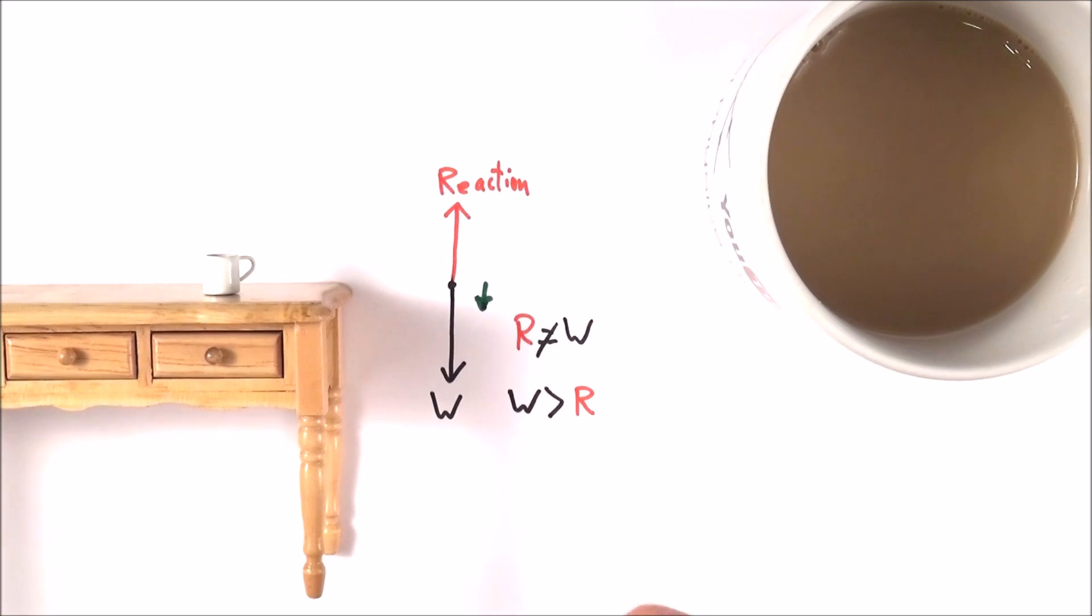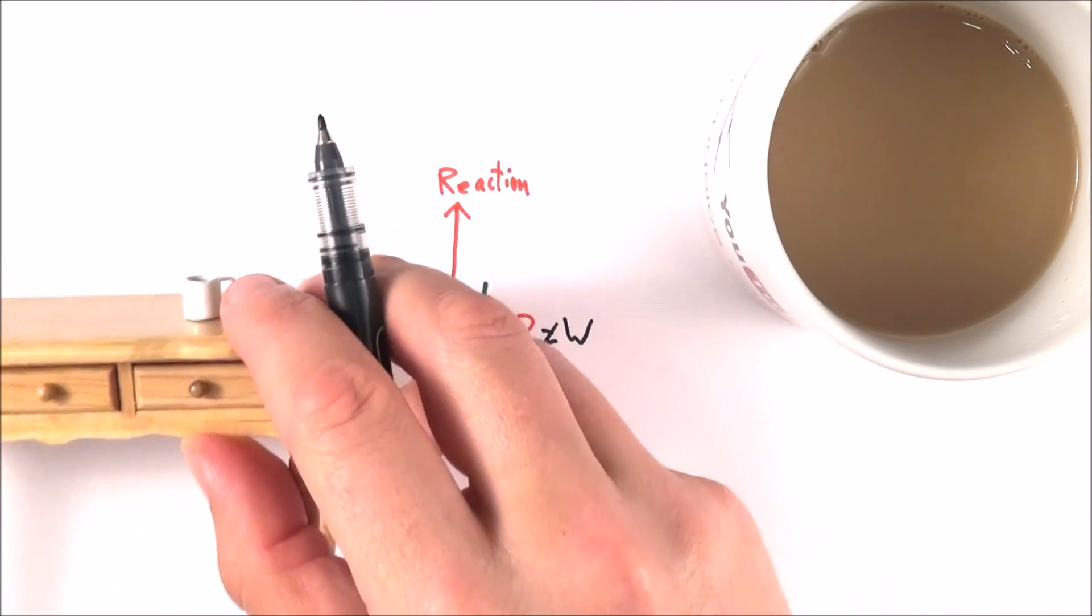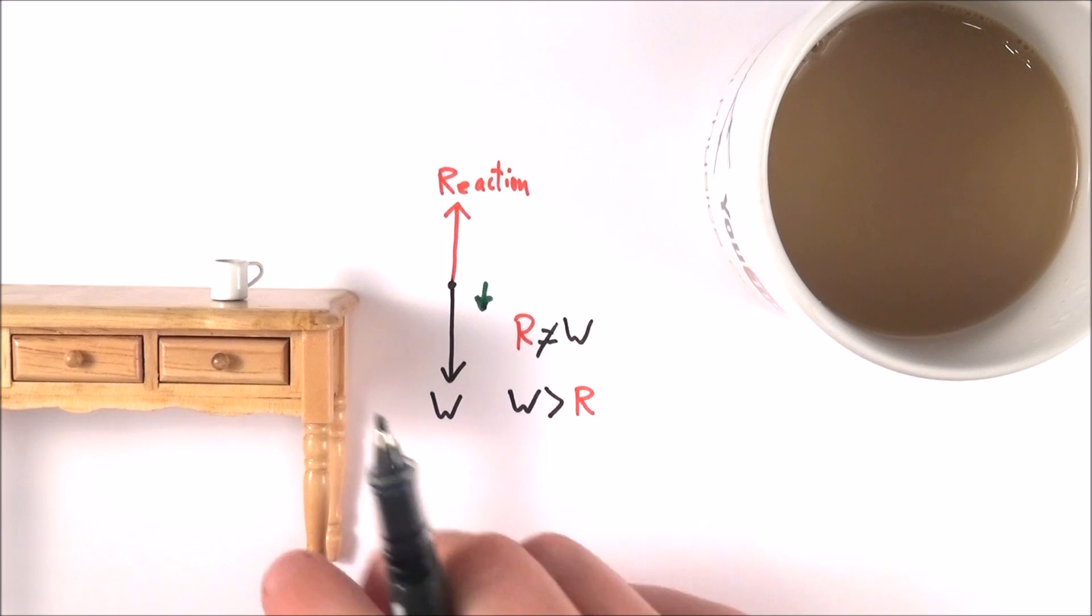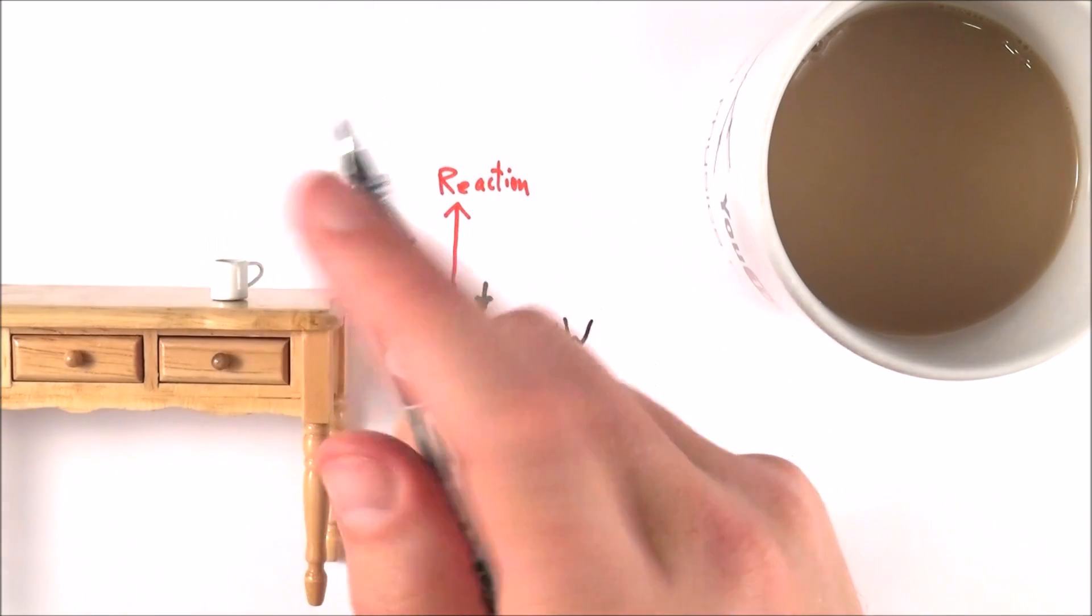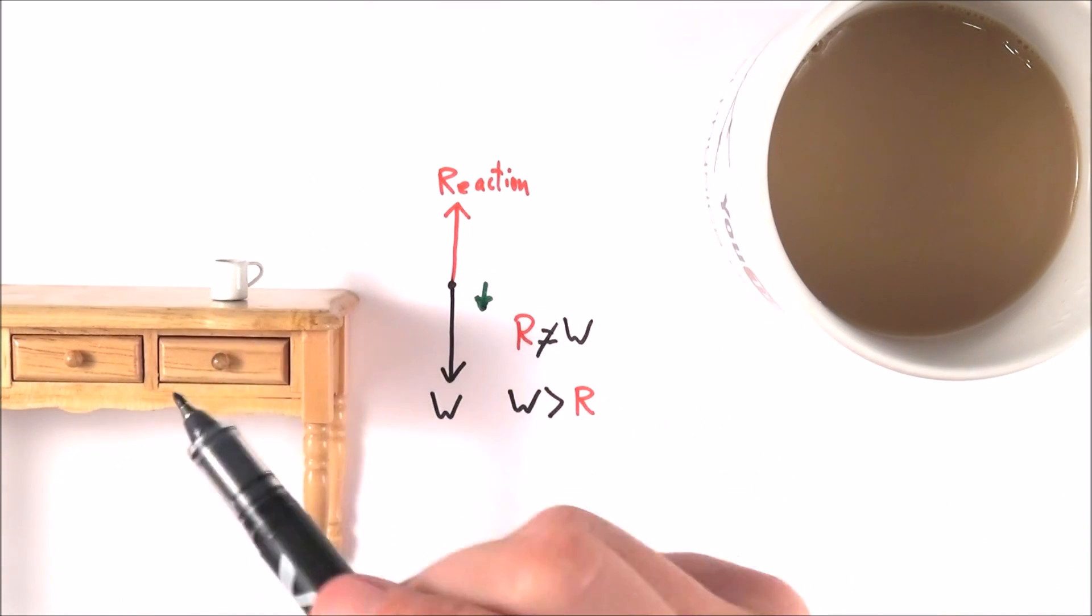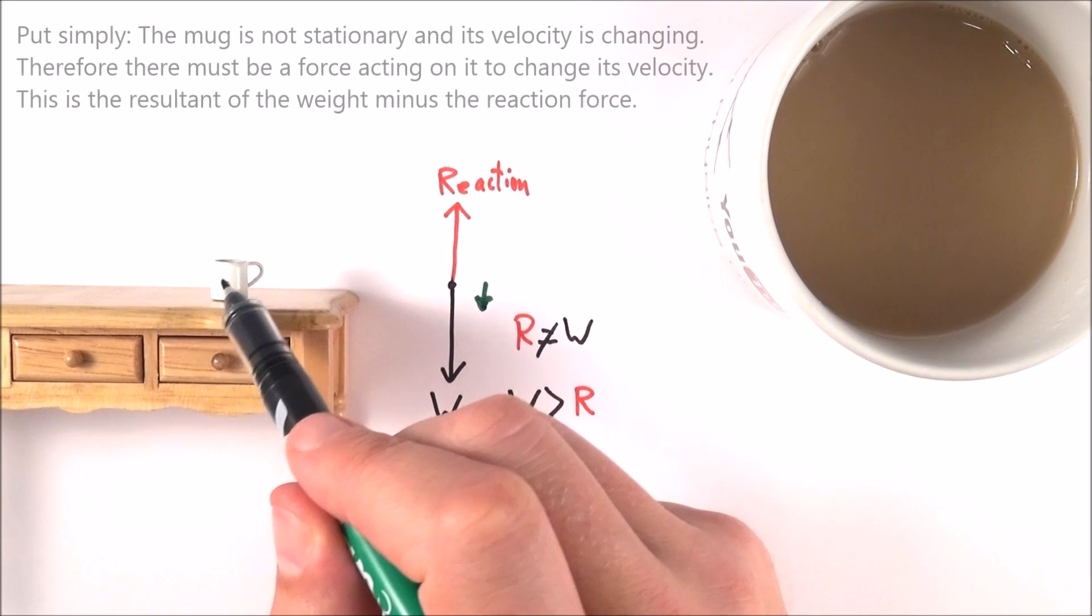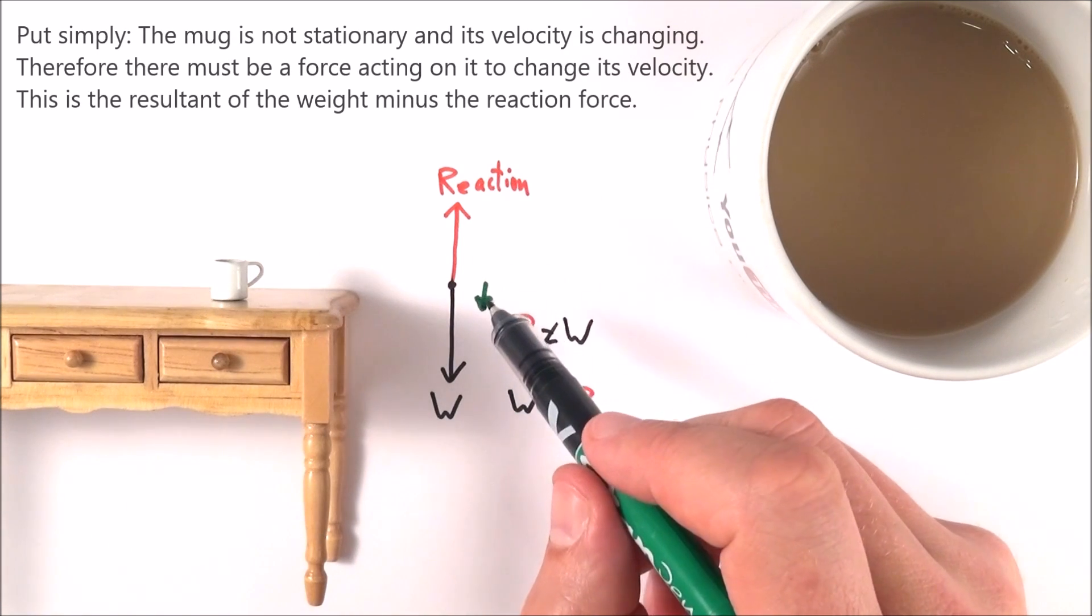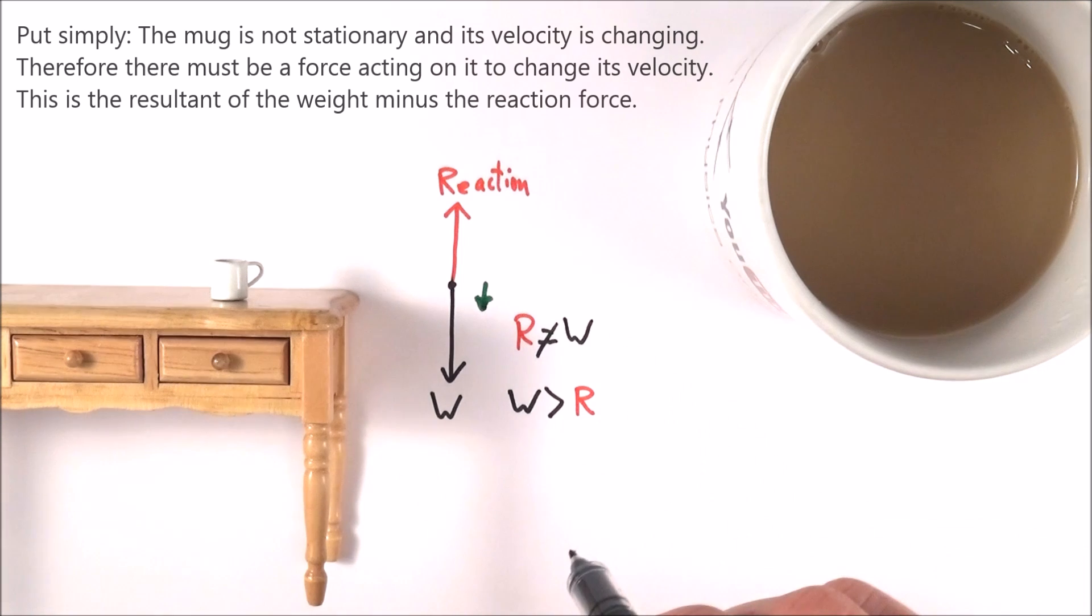Now, does that go against Newton's first law, you know, about objects which aren't moving? Well, Newton's first law always applies. And although this object isn't stationary, it isn't moving at a constant velocity, and therefore there must be an external force applied on this object to change its velocity, to keep it accelerating towards the centre of the earth.